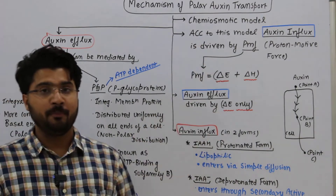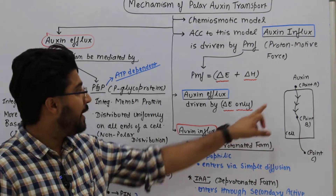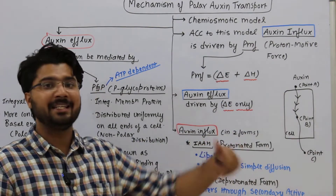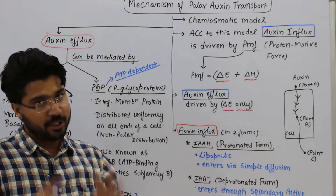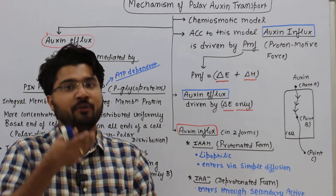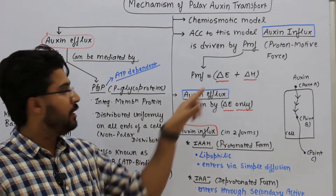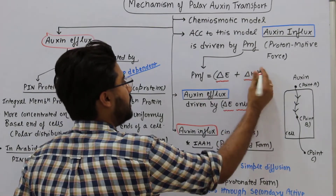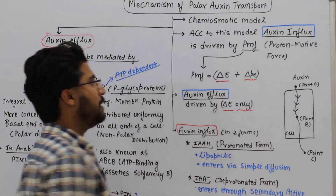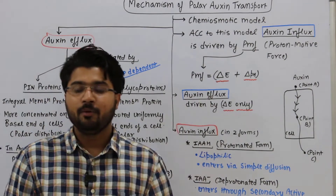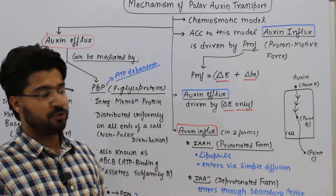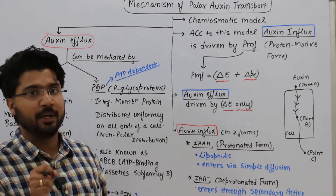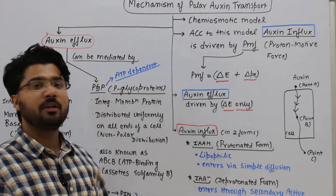According to this model, auxin influx — when auxin enters from point A to point B, that is from outside a cell to inside a cell — the rate of auxin influx is dependent upon two factors: ΔE and ΔpH. ΔE is the difference in membrane potential between those two points, and ΔpH is the difference in pH value between those two points.